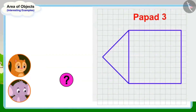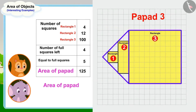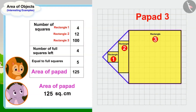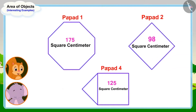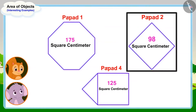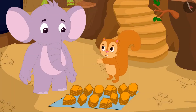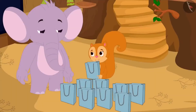Children, can you help Appu and Chanda by finding the area of this popper? If you wish to, you may stop the video and find the answer. We can find the area of this popper by making rectangles and squares. The area of this popper is 125 square centimeters. Chanda and Appu found the area of the third popper. The first popper has the largest area, meaning it is the largest. The second popper has the smallest area, meaning it is the smallest. Chanda excitedly told Appu.